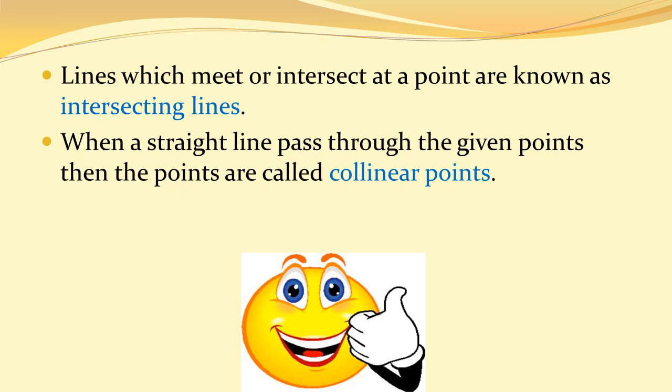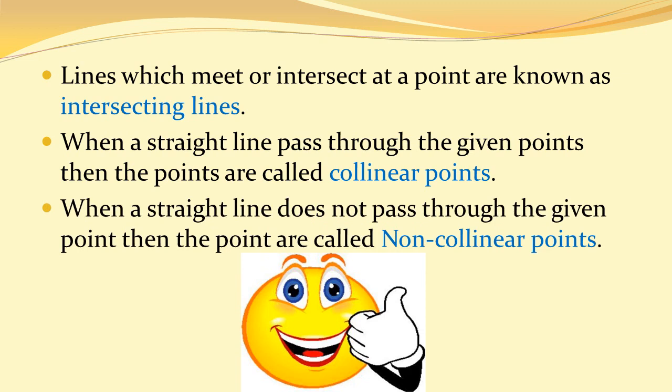Collinear points: When a straight line passes through the given points, then the points are called collinear points. Non-collinear points: When a straight line does not pass through the given points, then the points are called non-collinear points.